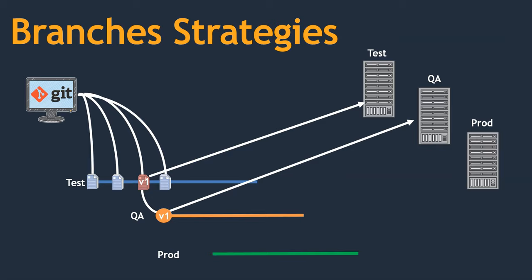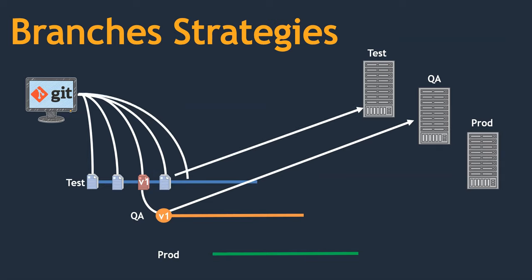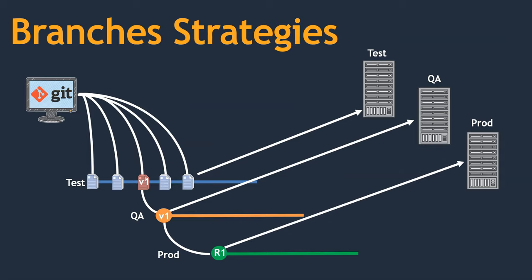Meanwhile, developers are still continuing to enhance the code because they want to introduce a few more features. They have done one more update — not working. One more update — also not working. But in the background we can still use version 1, so I can deploy version 1 as Release 1 on the production system.